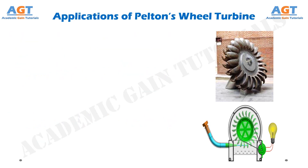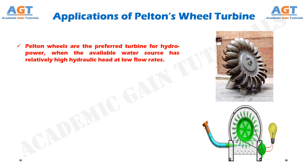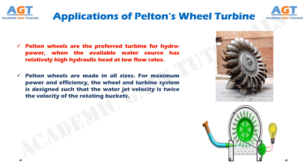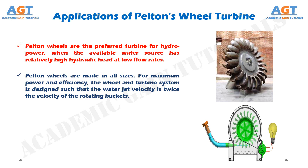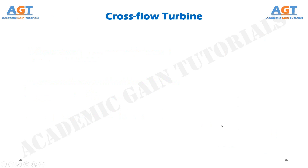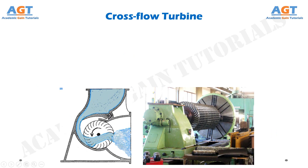Pelton wheels are the preferred turbine for hydropower when the available water source has relatively high hydraulic head at low flow rates. Pelton wheels are made in all sizes. For maximum power and efficiency, the wheel and turbine system is designed such that the water jet velocity is twice the velocity of the rotating buckets. There exist multi-ton Pelton wheels mounted on vertical oil pad bearings in hydroelectric power. Now let's see another type of impulse turbine: the cross-flow turbine.